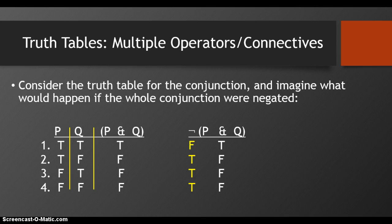Consider the truth table for the conjunction, and imagine what would happen if the whole conjunction were negated. When we negate a claim — any claim, whether simple or complex — we flip the truth values. So if that claim is true, the negated claim is false; if that claim is false, the negated claim is true. Looking at our truth table for P and Q, we see that all the truth values under the ampersand are flipped when we add the negation.